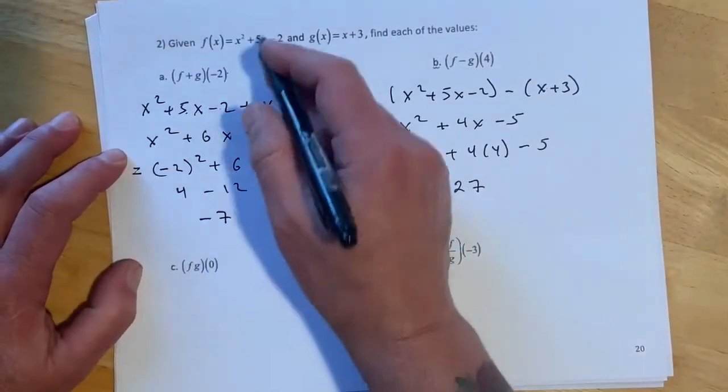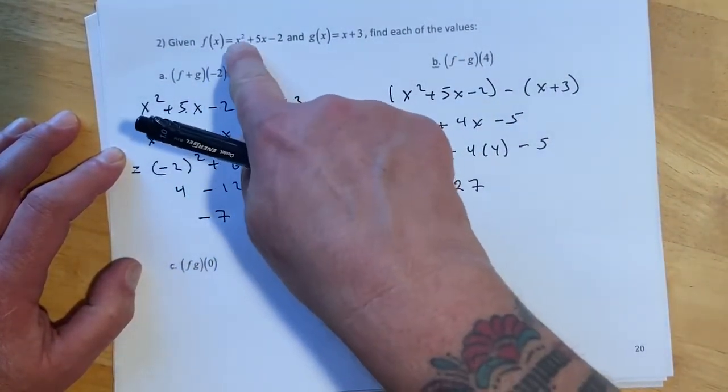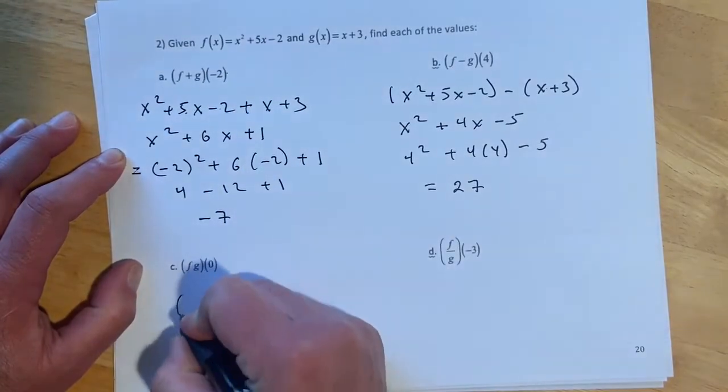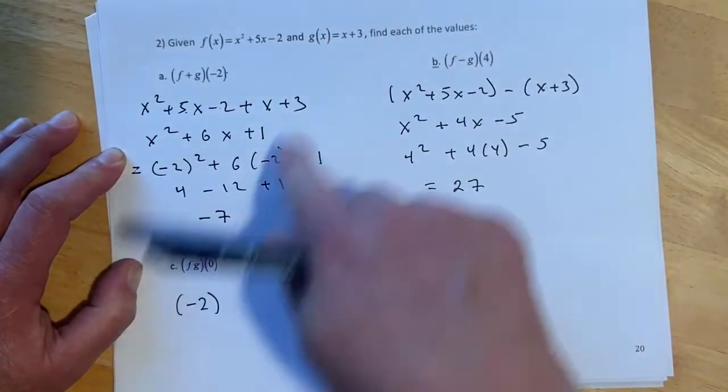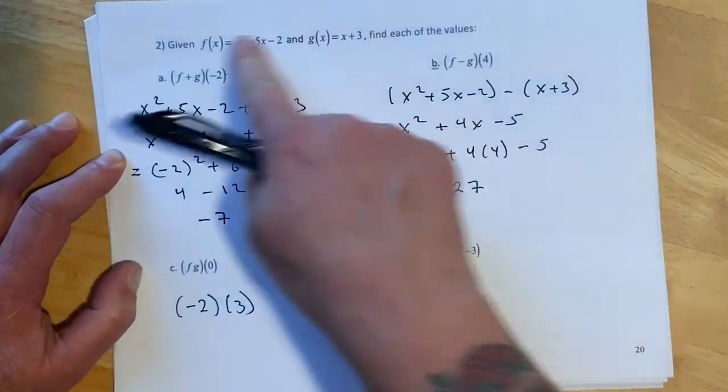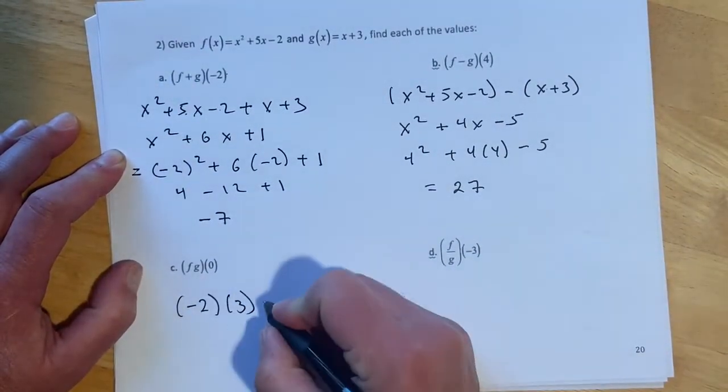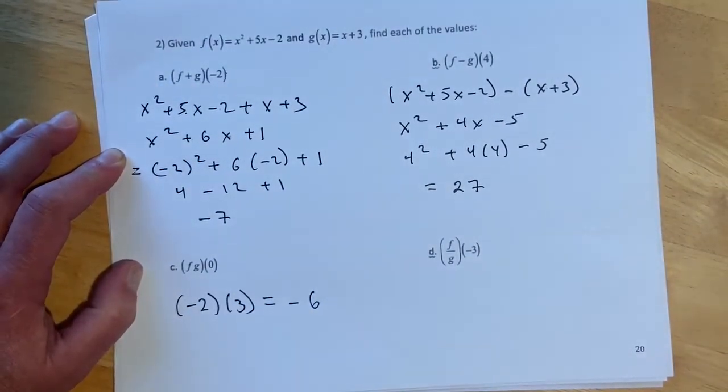f times g evaluated at 0. So here you can just see if I put in 0, x squared 5x drops out, so all that's going to be left is 2. And here if I put in 0, 0 plus 3 is going to be 3. So there's definitely no reason to do a big giant foil and then put in 0. It's much easier just to plug it in directly this time. And I get negative 6.